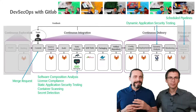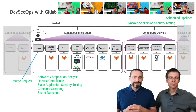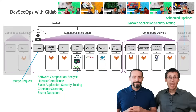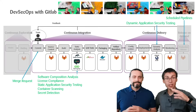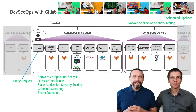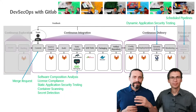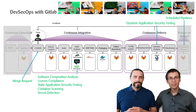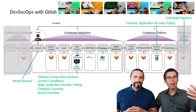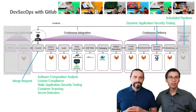Then we enabled license compliance checks so that we can find issues with licenses. We added static application security testing, meaning finding vulnerabilities or security issues in your own code. Then we enabled container scanning where we scan our containers for security vulnerabilities. Next we introduced secret detection where we scanned all our code for secrets like passwords that were accidentally added.